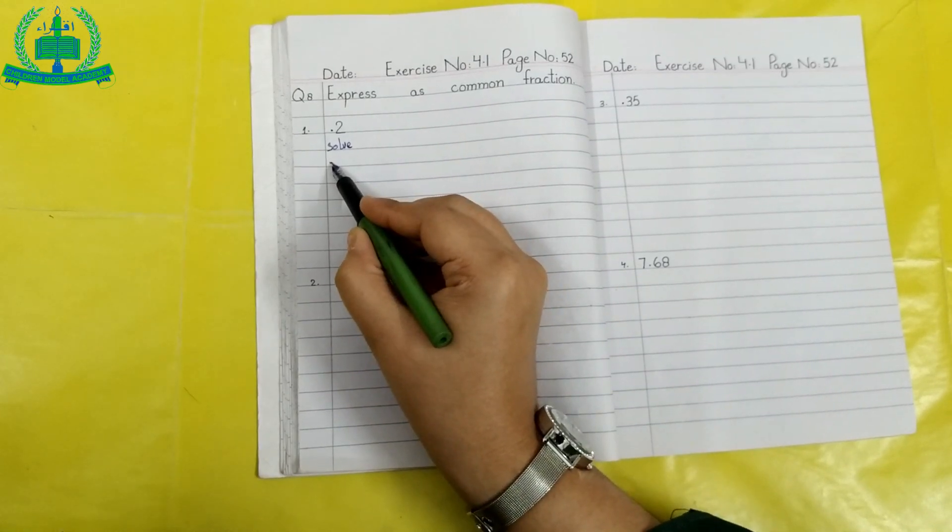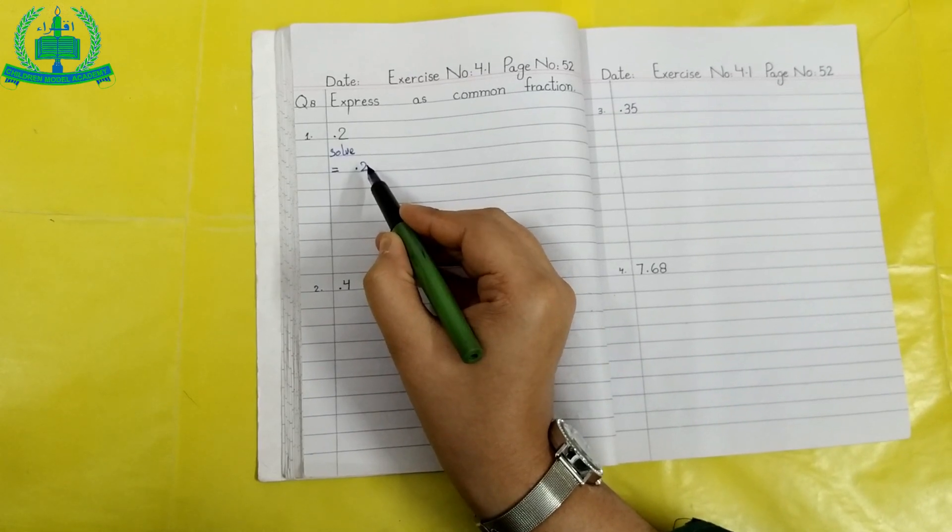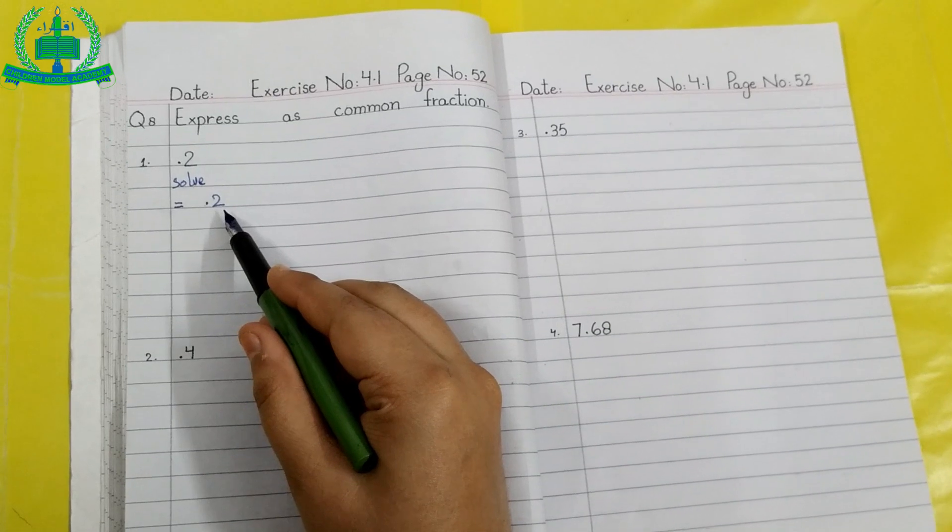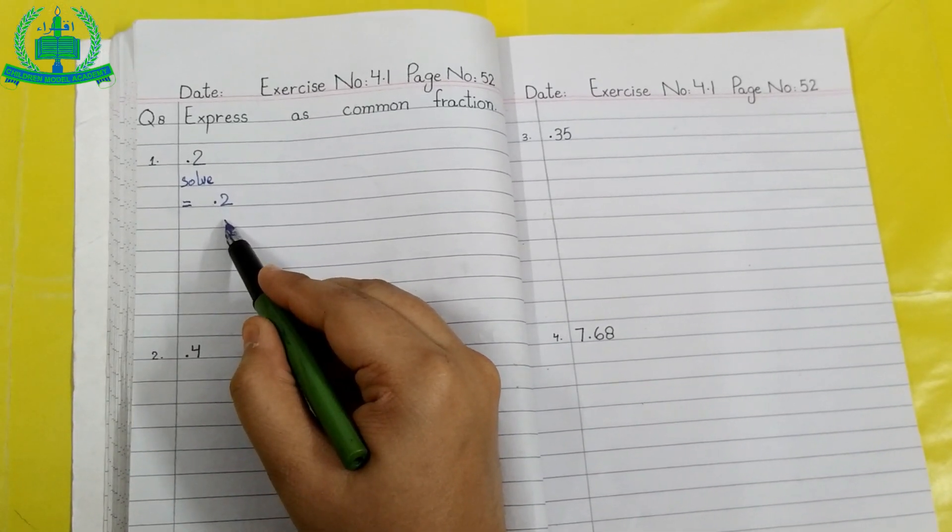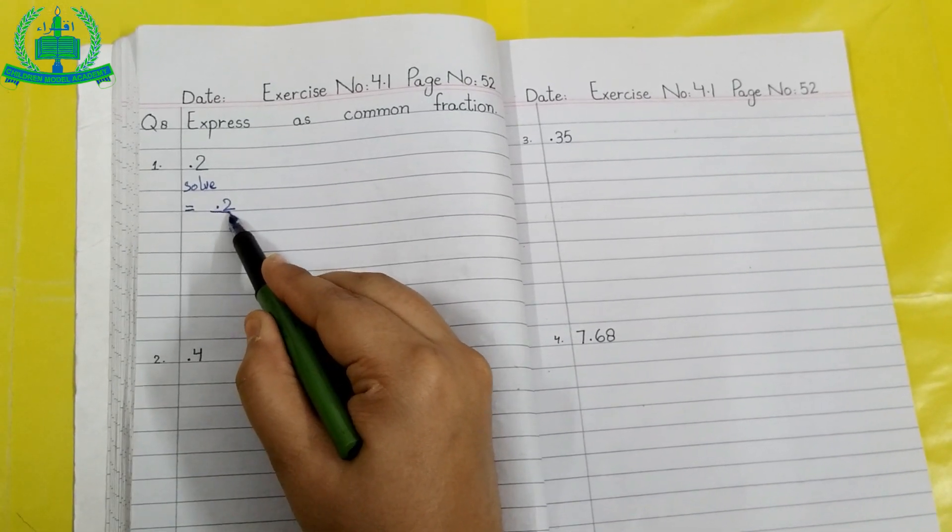We write equals sign, again we write 0.2. To convert decimal point into common fractions, if there is no denominator below a number, we suppose 1 as a denominator.